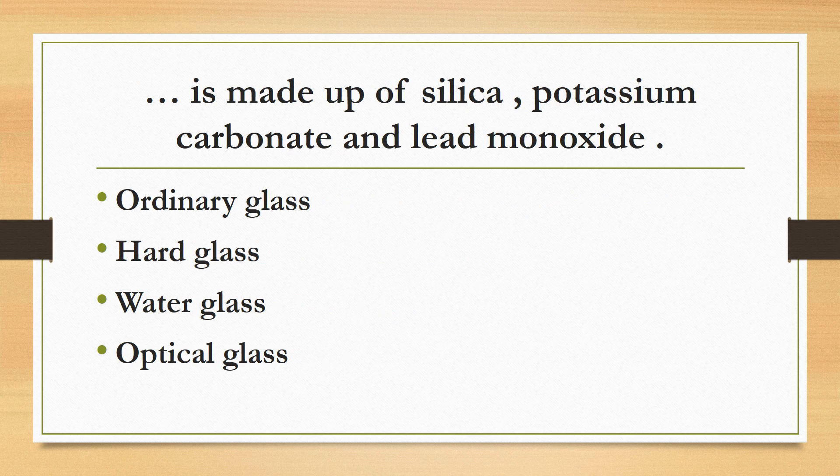What is made up of silica, potassium carbonate, and lead monoxide? Ordinary glass, hard glass, water glass, or optical glass? The correct answer is optical glass. Optical glass, also known as lead crystal or flint glass, is made from silica, potassium carbonate, and lead monoxide.